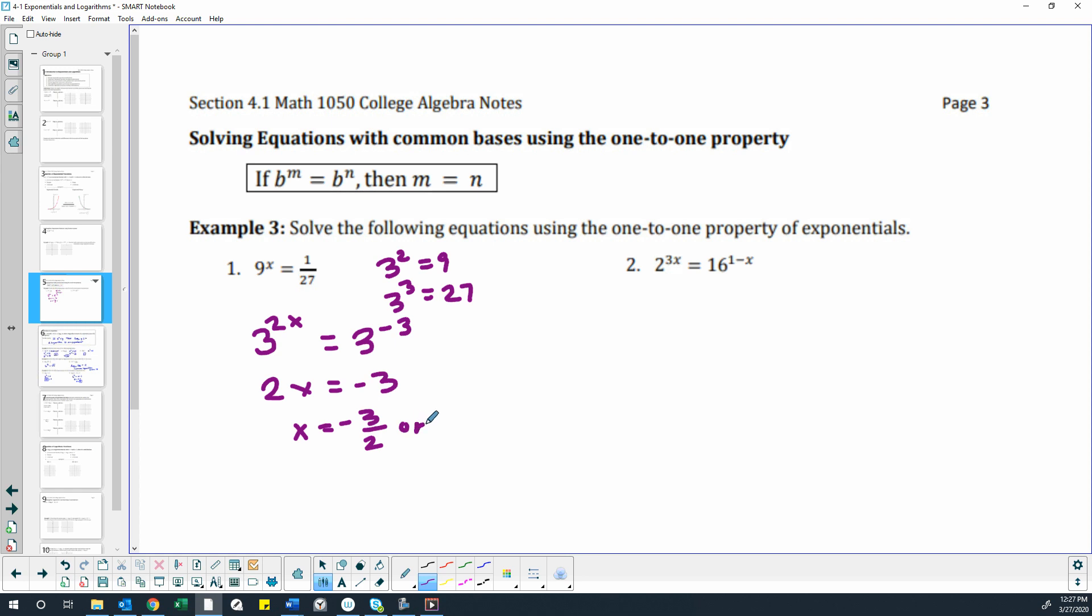Here's another one: 2 to the 3x equals 16 to the 1 minus x. Well, 16 can be rewritten as base 2. Base 2 is also already as small as it can go, so 16 would be 2 to the fourth power, because 2 times 2 is 4, times 2 is 8, times 2 is 16.